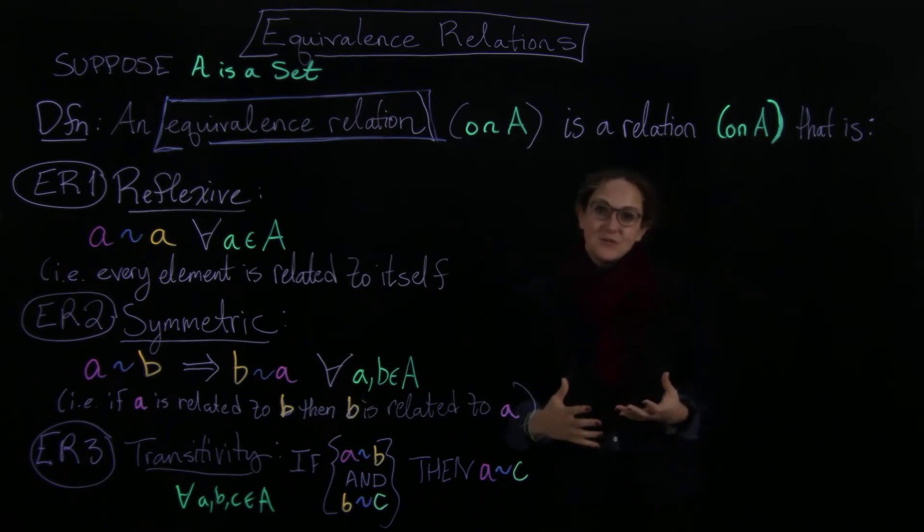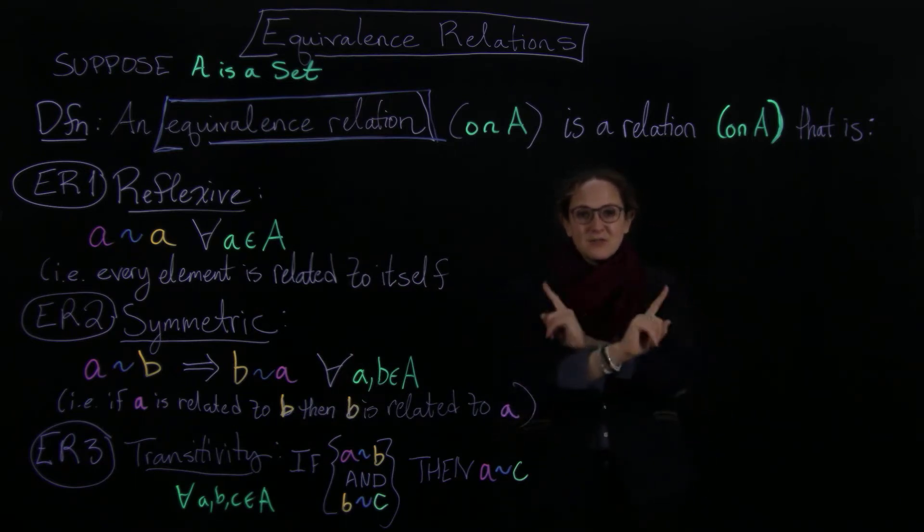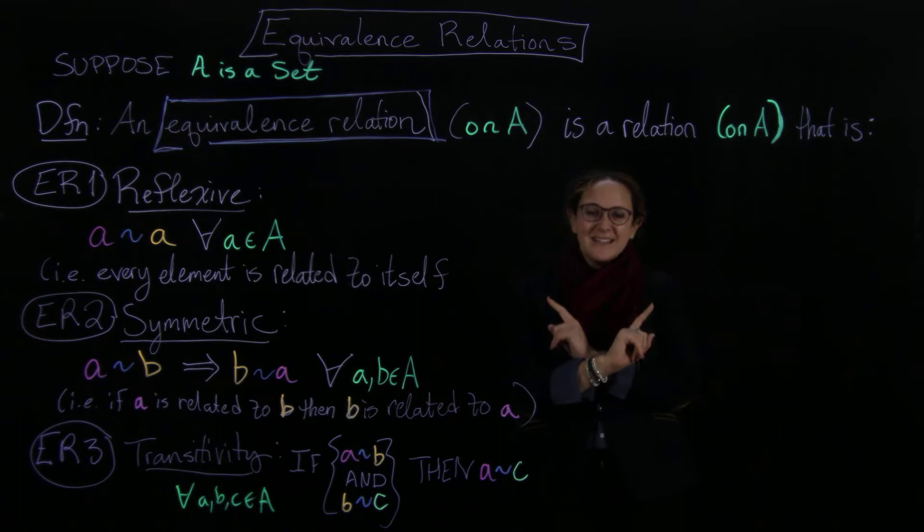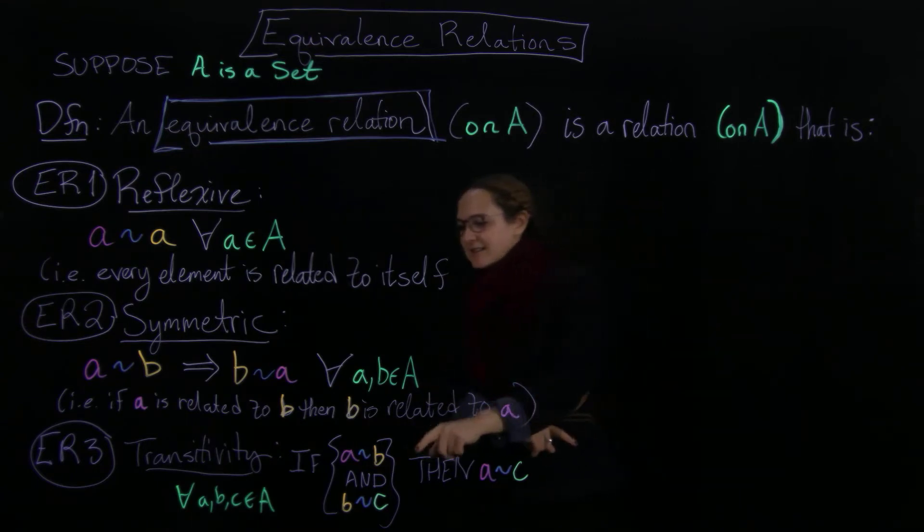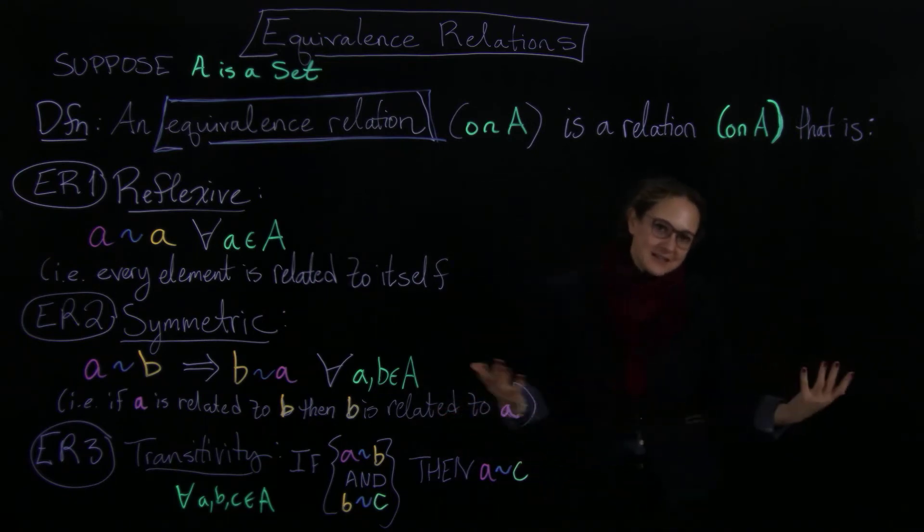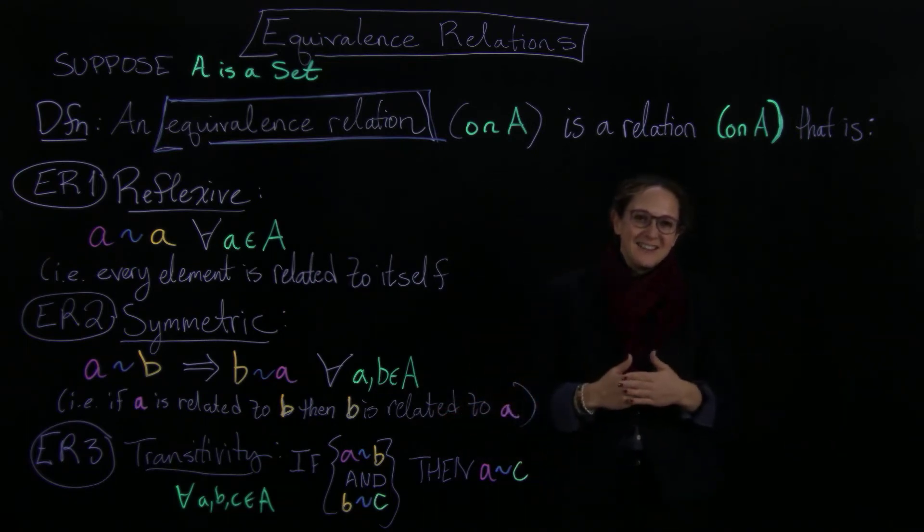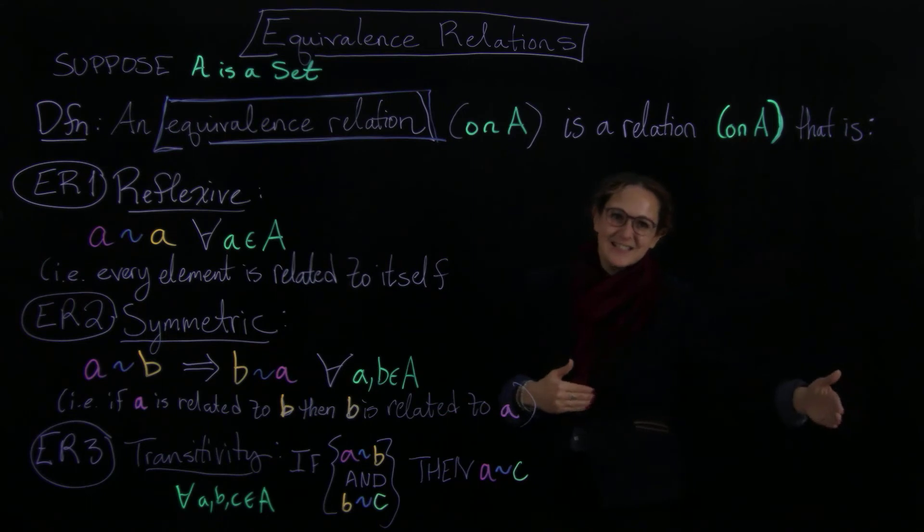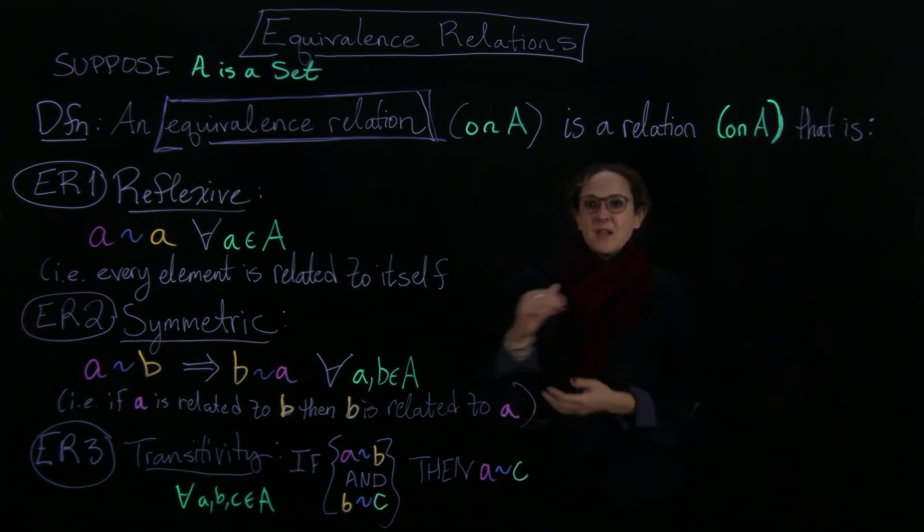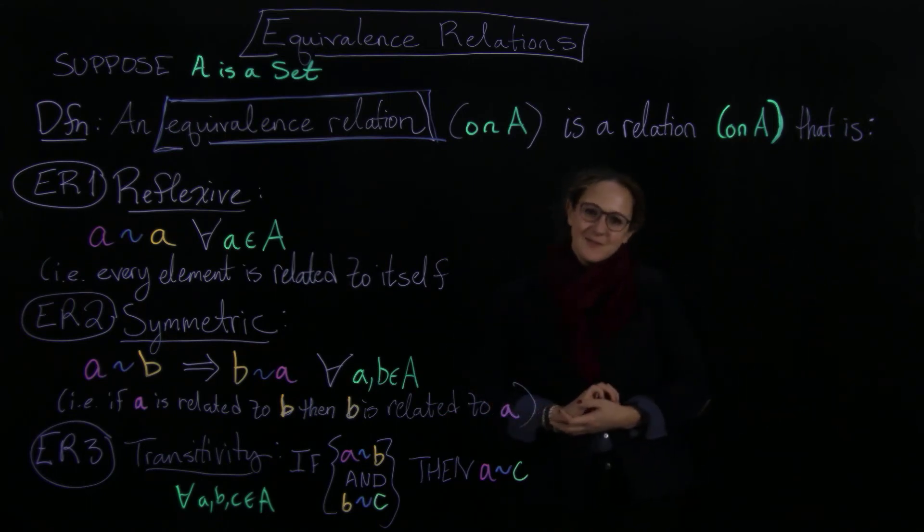Everything's related to itself. It goes, you know, you can swap. If A is related to B, then B is related to A. And then there's transitivity, which is basically that it's contagious. If A is related to B and B is related to C, then A is related to C. Okay, so I hope that made some sense, and I will see you in the next lecture.